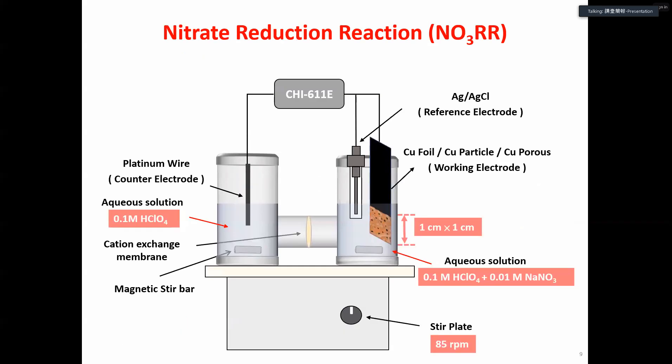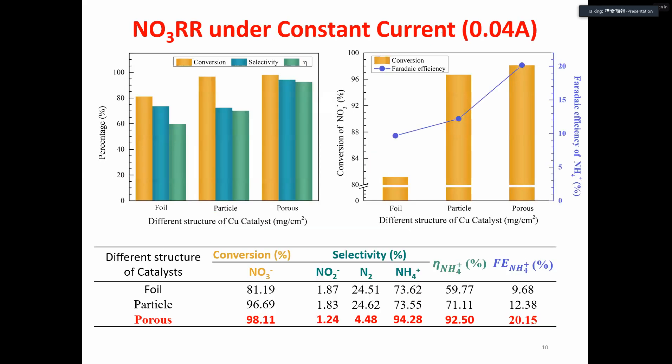We used the H cell to conduct the nitrate reduction performance of these three catalysts. Here is the result for nitrate reduction reaction after one hour at constant current of 0.04 ampere. We analyzed the nitrate conversion, selectivity, ammonium yield, and Faraday efficiency.